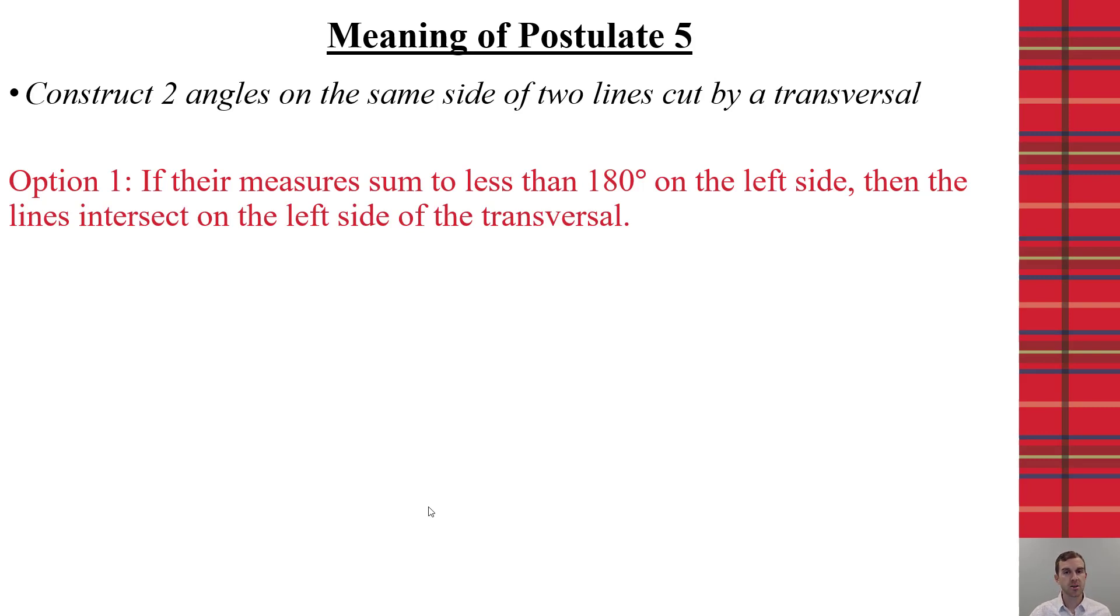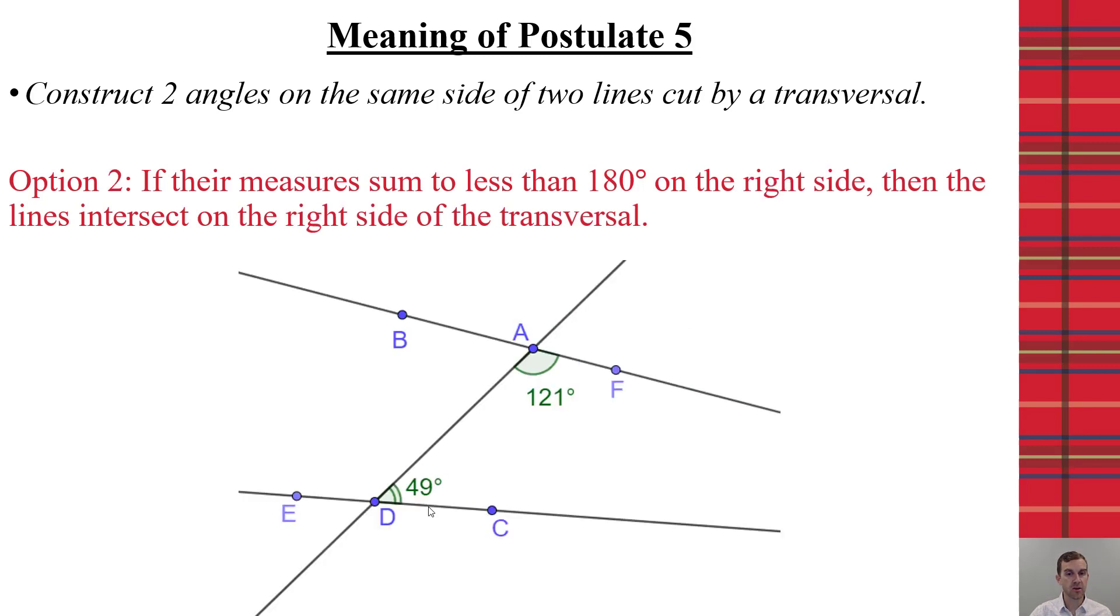So, if those same side interior angles on the left side are less than 180 degrees, we know that the two lines have to intersect on the left-hand side of the transversal. If they're less than 180 degrees on the right-hand side of the same side interior, that has to be where they intersect on the right-hand side of the transversal.